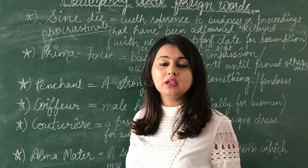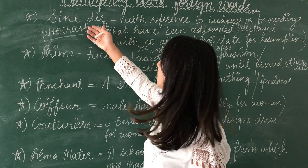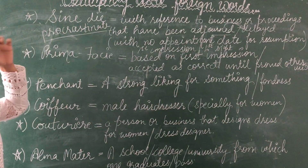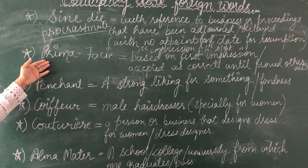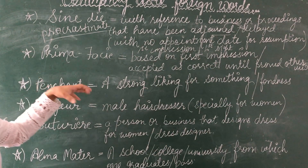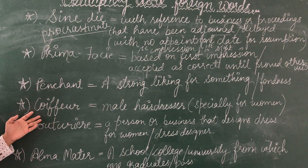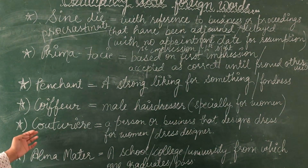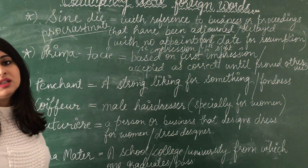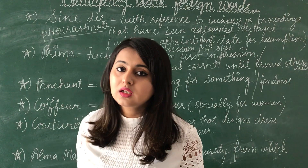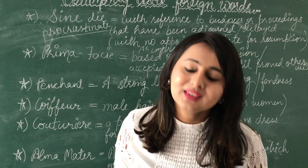These words are very important from any entrance examination point of view. Let's revise them once more: sine die means to delay something without giving any proper date; prima facie means based on first impression or first sight; penchant means a strong liking for something; coiffeur means male hairdresser; couturiere means dress designer; and alma mater means the school, college, or university from which we graduate. Thank you so much — please like, share, and subscribe. Keep learning!